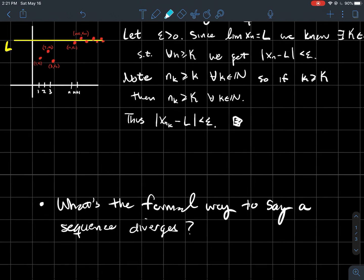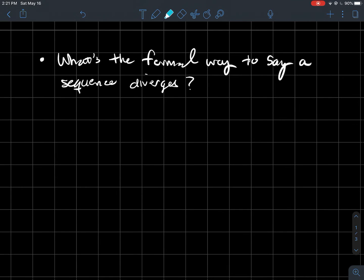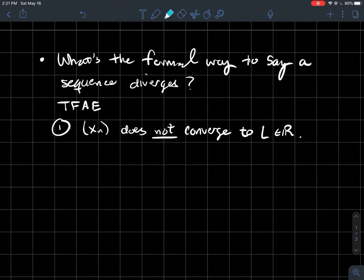So the next thing I want to tell you about is, what's the formal way to say that a sequence diverges? So how do I say that a sequence does not converge to a given number? So you might see this in some books. TFAE is short for the following are equivalent. So what I'm going to say, each of the things I'm about to say are characterizations of each other. They're all if and only ifs of each other. So one, xn does not converge to this number L.